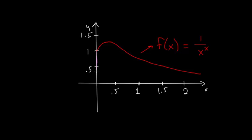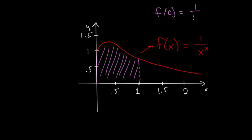from an x value of 0 to an x value of 1. So our answer would just be this area here. And there are a couple things to note about this function. If we evaluate it at 0, we get 1 over 0 to the 0, which is indeterminate.